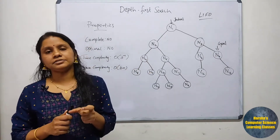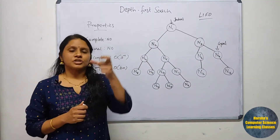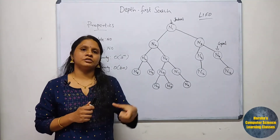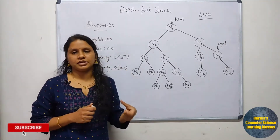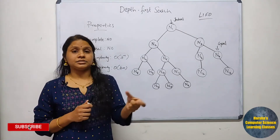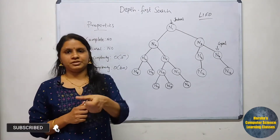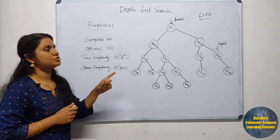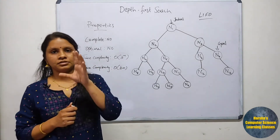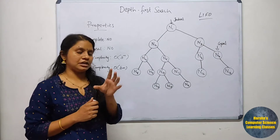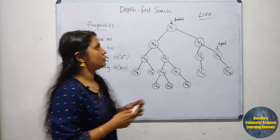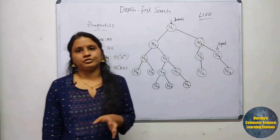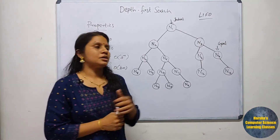The main idea behind Depth First Search is that we traverse from a node to its deepest level — from one neighbor node to another neighbor node — rather than exploring the siblings. The main data structure used to implement this DFS search strategy is Last In First Out, that is LIFO.